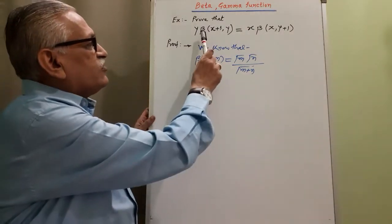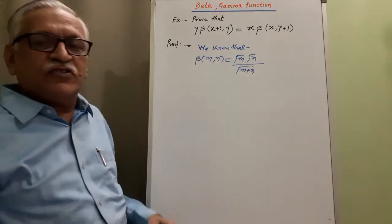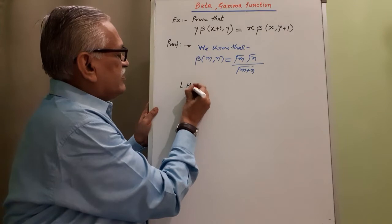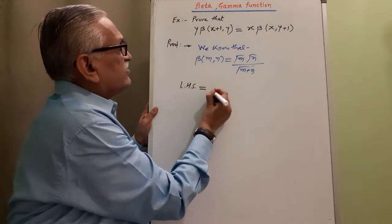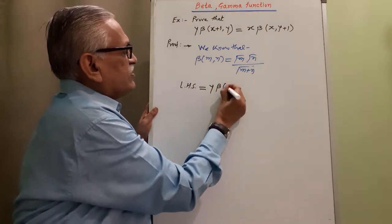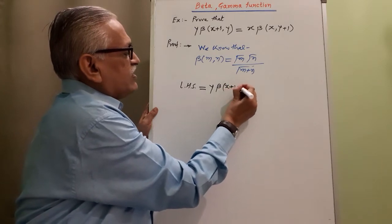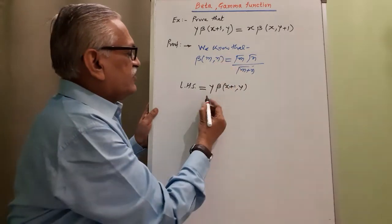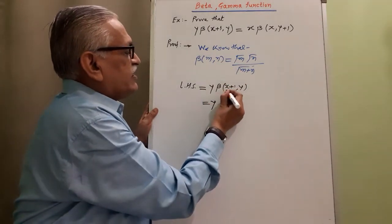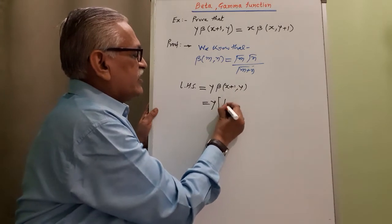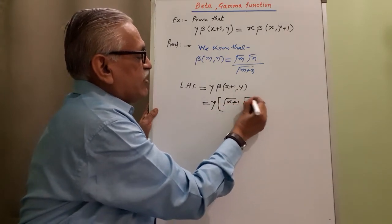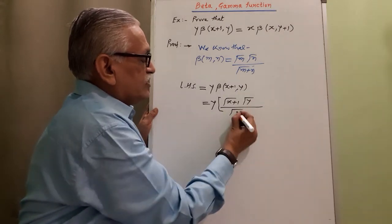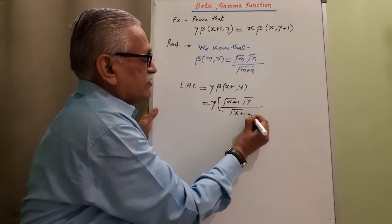and try to convert LHS into RHS. Therefore, we consider LHS, left-hand side, is Y beta of X plus 1, comma Y. And then converting this beta in terms of gamma by this relation, we get Y. This beta I can rewrite as gamma of X plus 1, gamma of Y divided by gamma of sum of these two. Therefore, it is X plus 1 plus Y.